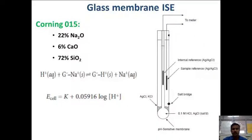According to the Nernst equation, the potential difference generated while using the glass electrode is related to the hydrogen ion concentration by: E_cell = K + 0.05916 × log[H⁺]. This equation explains the relationship between the potential difference and hydrogen ion concentration.